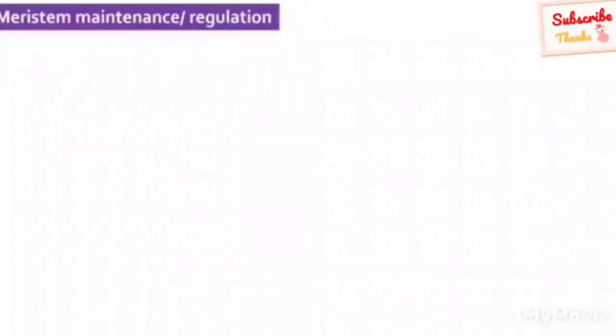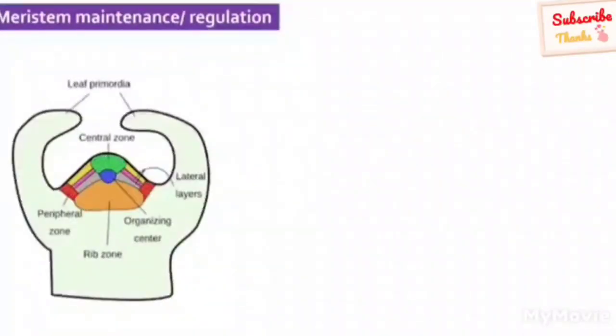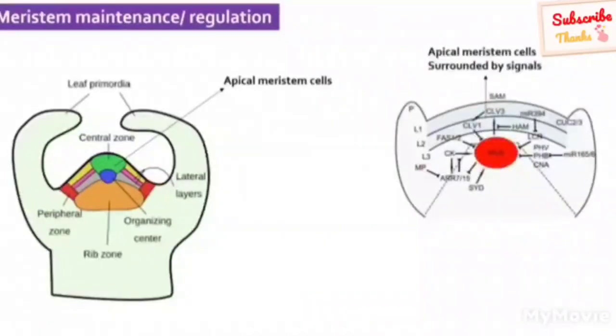We now know that meristem or stem cells have the innate ability to divide. The division of meristem cells is a highly regulated and coordinated process. Meristem cells are present in specific niche or locations which are surrounded by meristem maintenance signals. And as the cell displaces or moves away from these signals, they slowly lose their meristematic potency to divide and undergo specialization depending upon the surrounding signals.